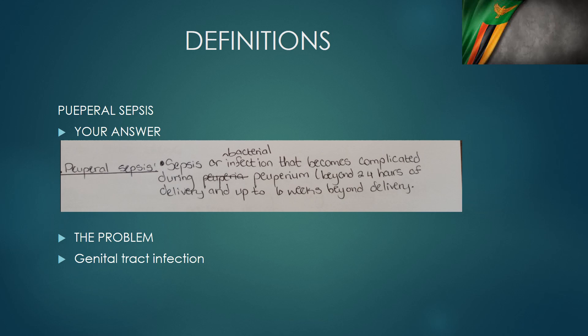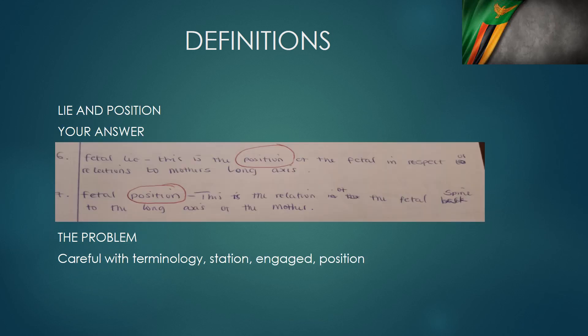The next definition: you've been asked to define puerperal sepsis. The answer given is 'sepsis or infection in the puerperium, 24 hours after delivery up to six weeks beyond delivery.' They have an idea of what puerperal sepsis is, but the big issue is that it's specifically genital tract infection — not just any infection. If you don't say genital tract infection, you get a zero. Malaria or meningitis in the puerperium is not puerperal sepsis. You have to be specific: genital tract infection in the puerperium.